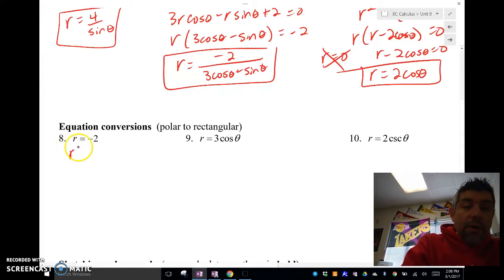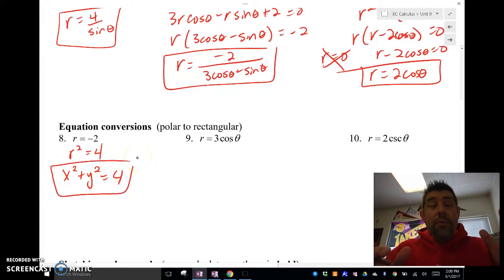r² = 4, and I know that r² = x² + y². And we get our answer there. So we've got a circle with a radius of 4.